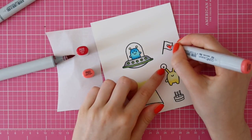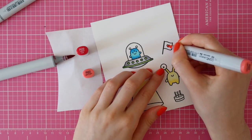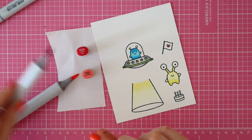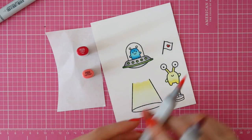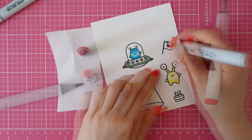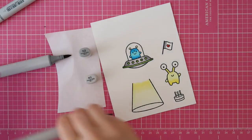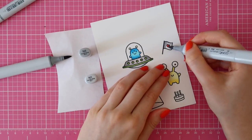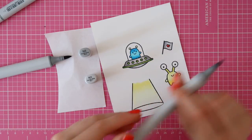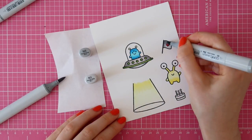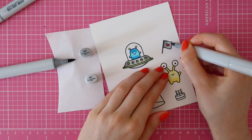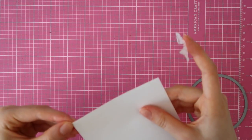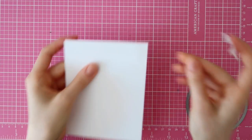For the heart on the little flag, I'm using R29 and R22. And then for the actual flag, I'm using N3 and N1. Whenever I'm coloring really tiny images, I usually use two shades for each color. And then when I'm coloring bigger images like the biggest alien, I like to use three different shades.